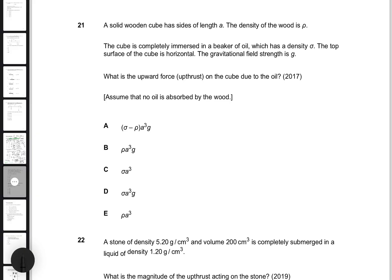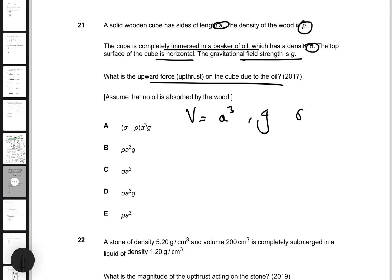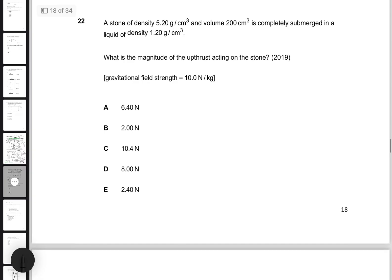Question 21. A solid wooden cube has sides of length A, so the volume is A cubed. The density of the wood is rho, and the cube is completely immersed in oil of density sigma. According to Archimedes' principle, the upward buoyant force is sigma times G times A cubed, making choice D correct. Many might choose B, but that rho is the density of the wood — you want the density of the liquid, not the wood.